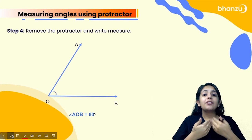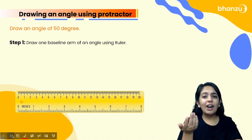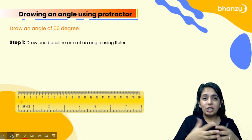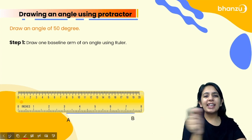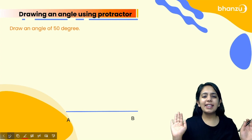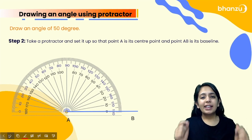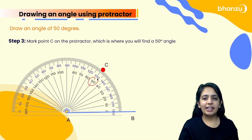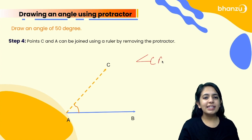What if you have to draw an angle? Let's say we have to draw an angle of 50 degrees. First, take a scale and draw any baseline of any length — let's call it AB. Now remove the scale. Keep the protractor on vertex A. Since we have to draw 50 degrees, mark the point at 50 degrees on the protractor. Then join A to that point C. Now you have angle CAB equal to 50 degrees, that is angle A is 50 degrees.